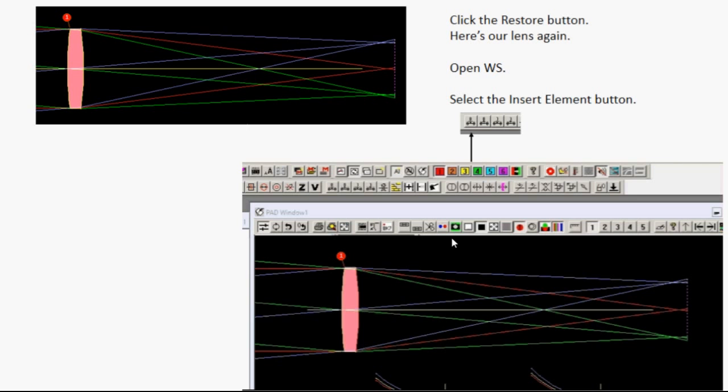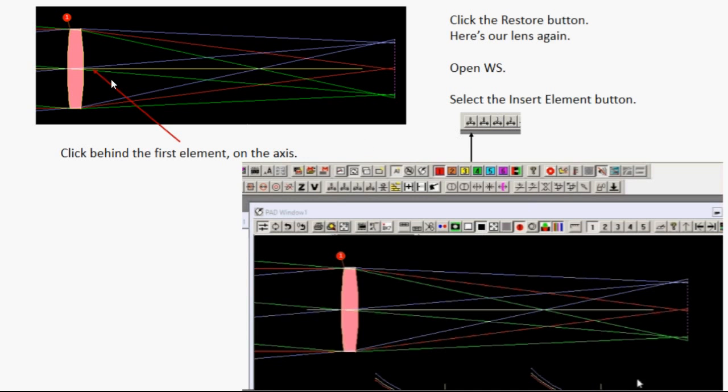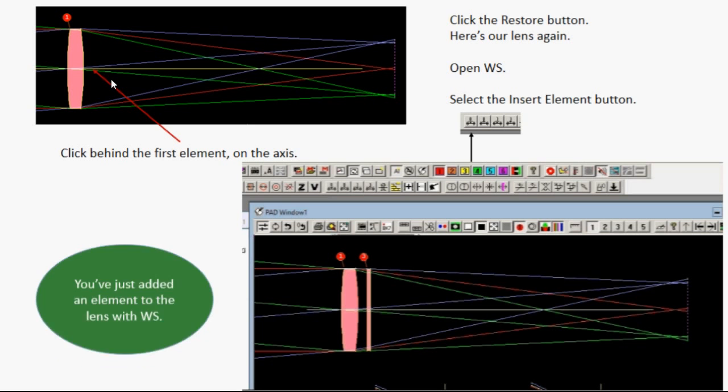First of all, click the Restore button if you didn't do that already. Open the worksheet, and you want to select the Insert Element button. Then you want to click just behind the first element. I'll do it here in real time, so you can watch. Click the button. Click on the axis. There you go. Now, you've just added an element to the lens with the worksheet.